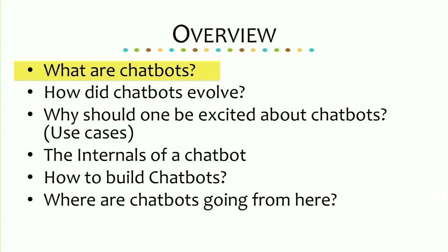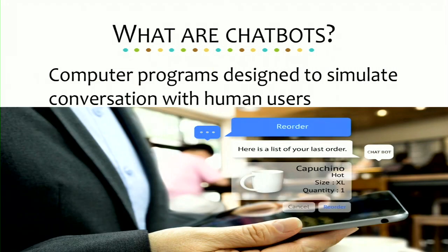The first question: what is a chatbot? It's basically a computer program that's designed to simulate conversations with human users. Here's an example where somebody types in 'reorder,' and the chatbot knows the context of what you're talking about. It says, 'It looks like your last order was this one — cappuccino, extra hot, extra large size, and the quantity was one.' And you have two options: cancel or reorder.